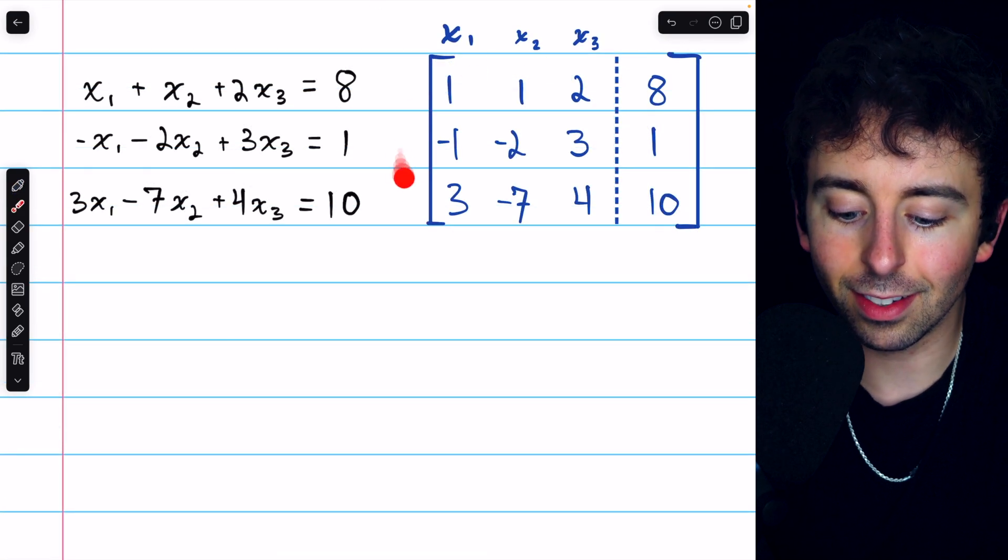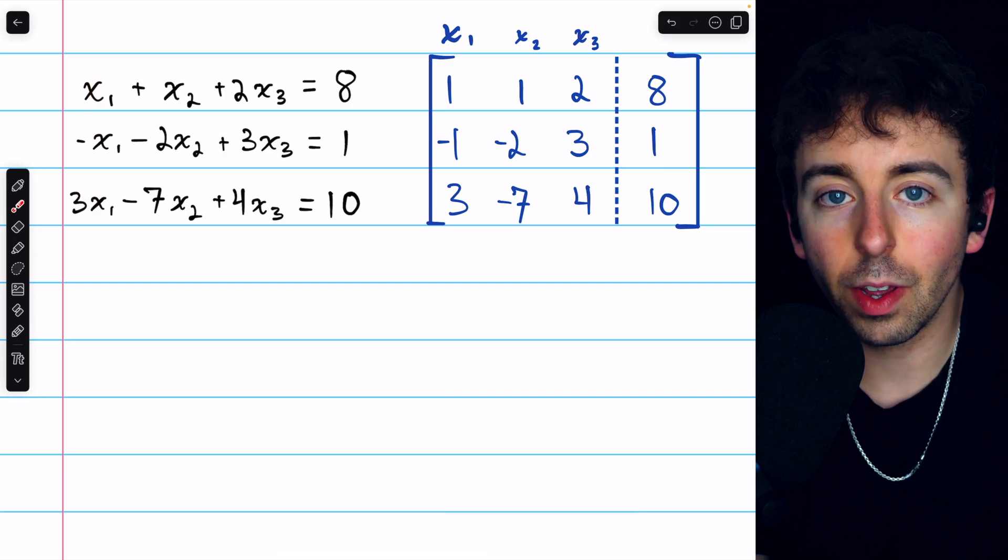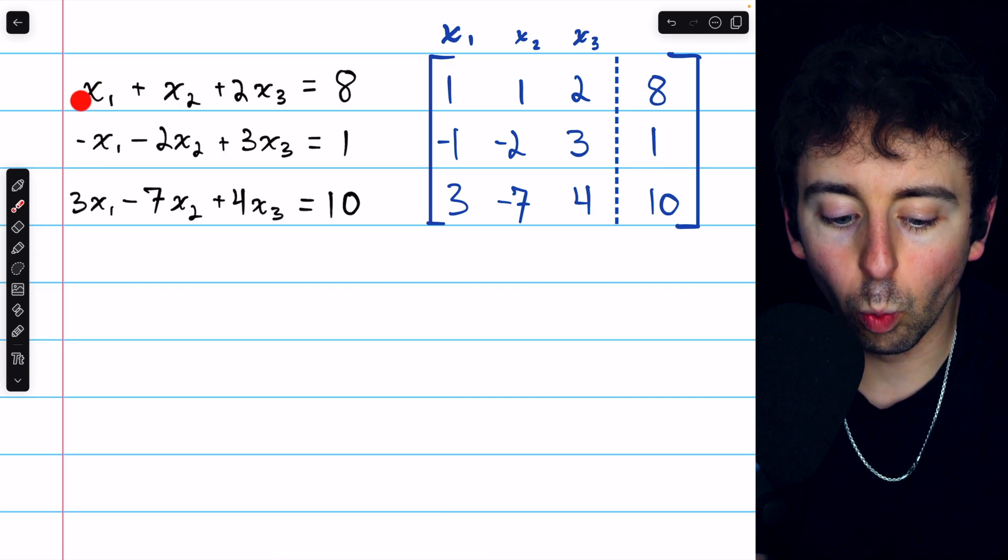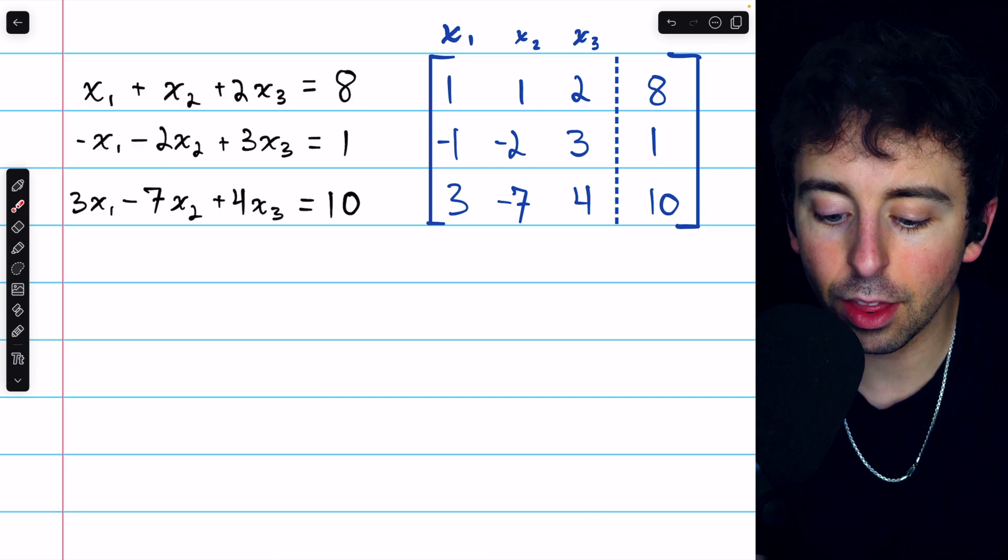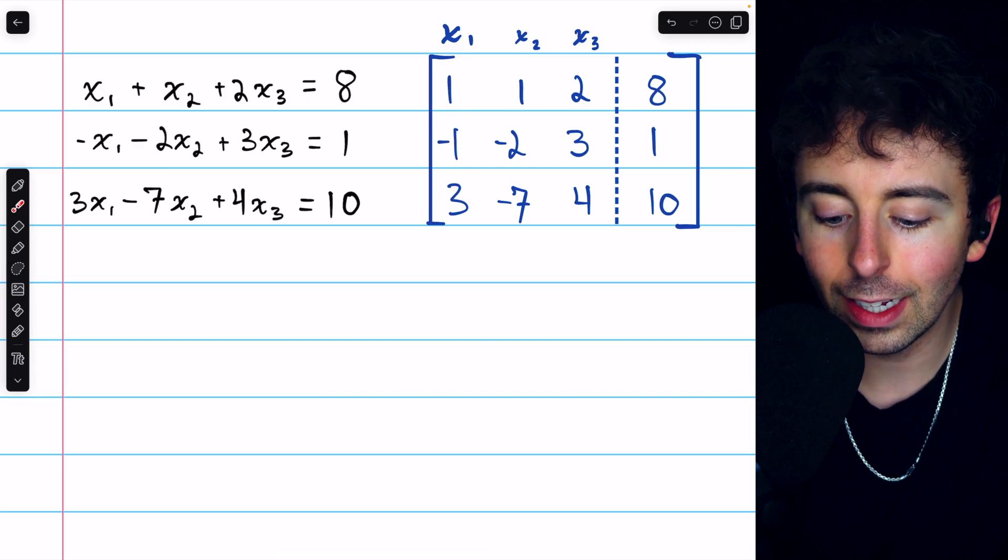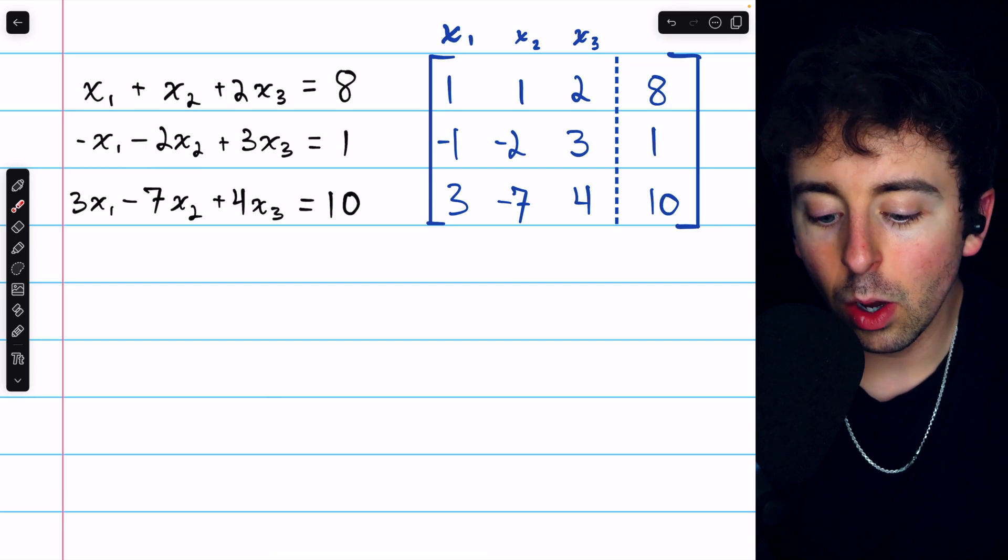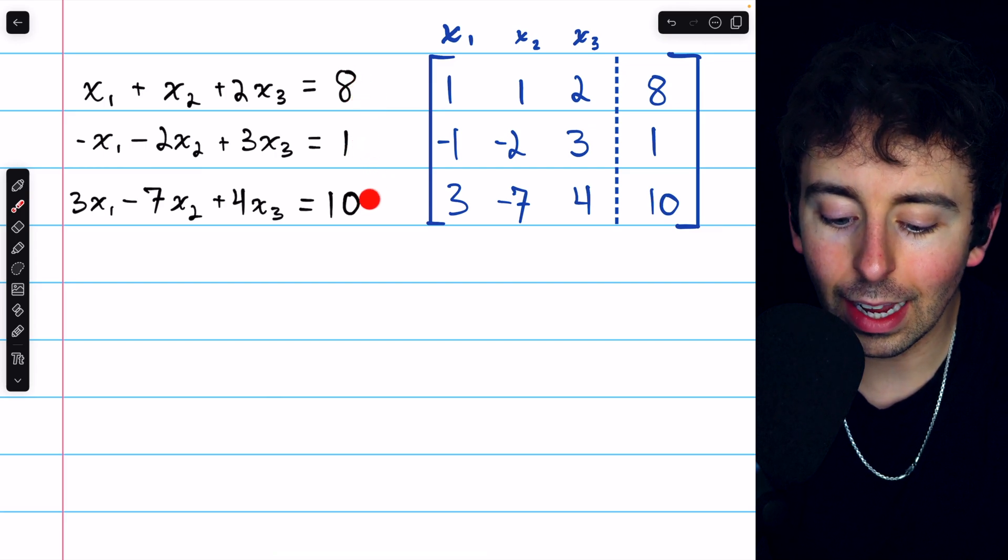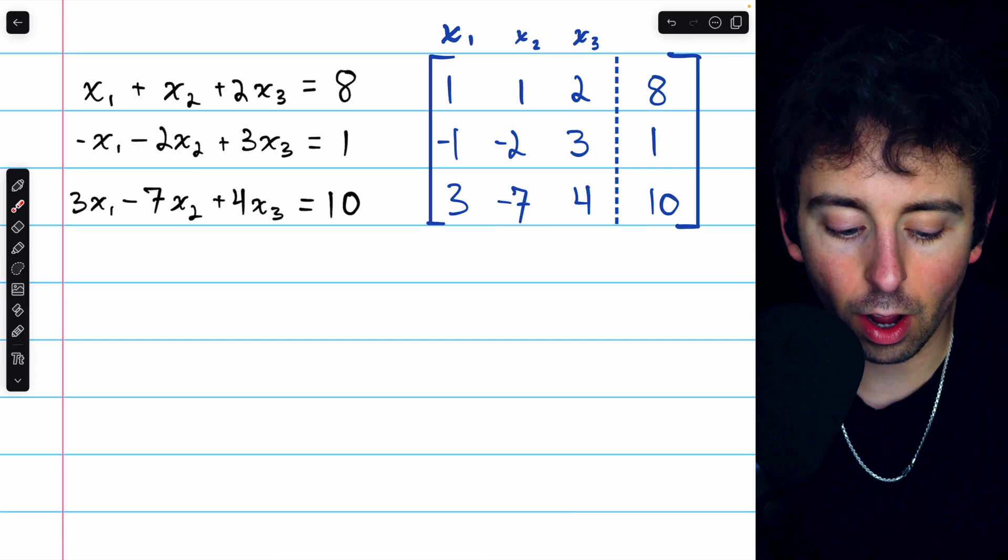And that looks like this. You can see the coefficients of x1, for example, are 1, negative 1, and 3, which we see here in our first column: 1, negative 1, and 3. We also see the constants 8, 1, and 10 in the rightmost column.